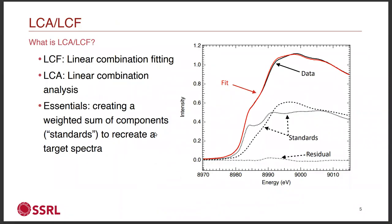So let's get into it. LCA and LCF: LCF is linear combination fitting, LCA is linear combination analysis. They're usually used interchangeably. LCF is the actual fitting component, whereas LCA includes all other aspects of analysis — doing statistical analysis to compare two different fits, maybe using PCA to determine the number of standards. The essentials of linear combination analysis are using a weighted sum of a predefined set of standards to model a target spectrum.